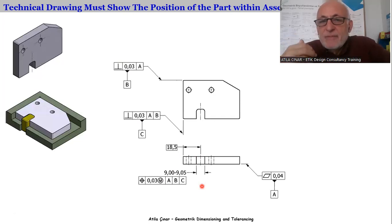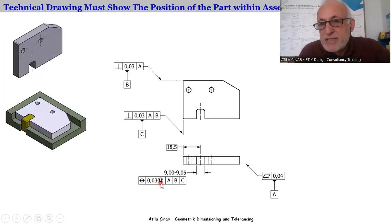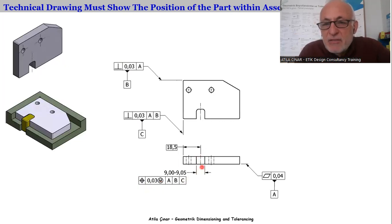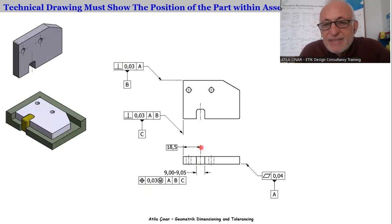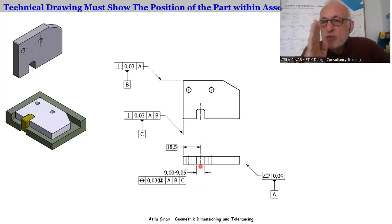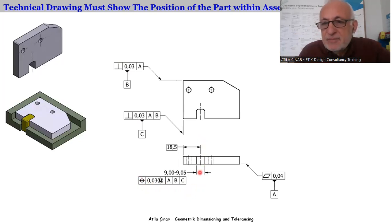Now let's look at the part to understand the meaning of this position tolerance. We must ask: what is the relation of this keyway to datum A, to datum B, and to datum C? The relation is the relation of the axis plane. The position of the axis is very important for the location, for the true position, for the assembly. So the position tolerance here is for the axis — the position of the axis. The relation of the axis plane with A, B, and C is 0.03 millimeters.